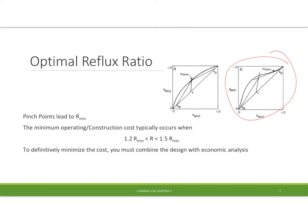And it's going to turn out that I'm going to minimize my cost when I combine both looking at the cost of building the tower and operating it. That means that I'm going to want to choose an R value typically between 1.2 and 1.5 times our minimum reflux ratio. Now, in order to specifically minimize this, I'm going to have to do some economic analysis. And we will be looking at this a little bit later in the semester.